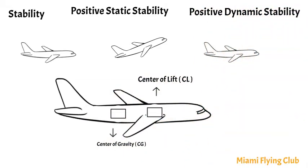Positive Dynamic Stability is the tendency of an oscillating airplane to return to its original position relative to time.